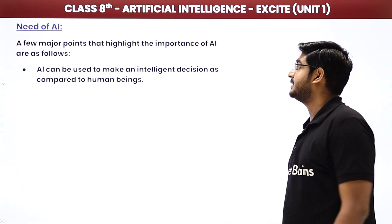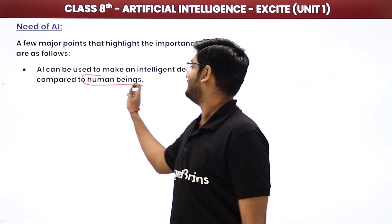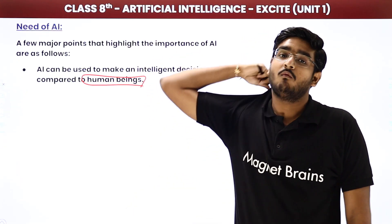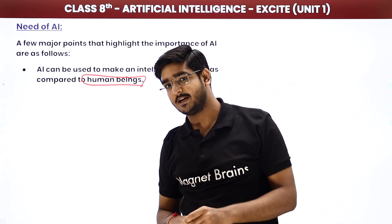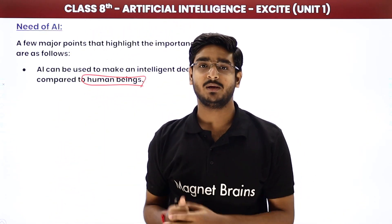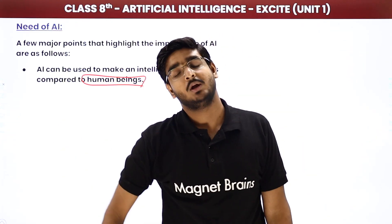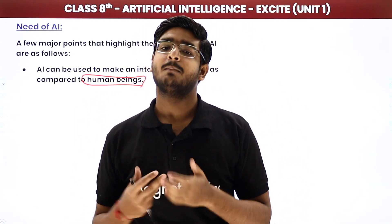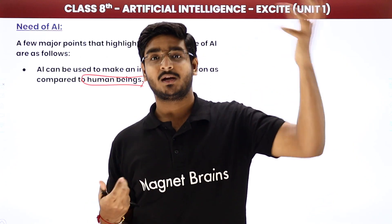AI can be used to make intelligent decisions as compared to human beings — because human beings don't always have the required efficiency and accuracy, AI can help make better decisions. For example, in a chess game, an AI playing against a world champion can make perfect, calculated moves at every stage — decisions better than those of humans.